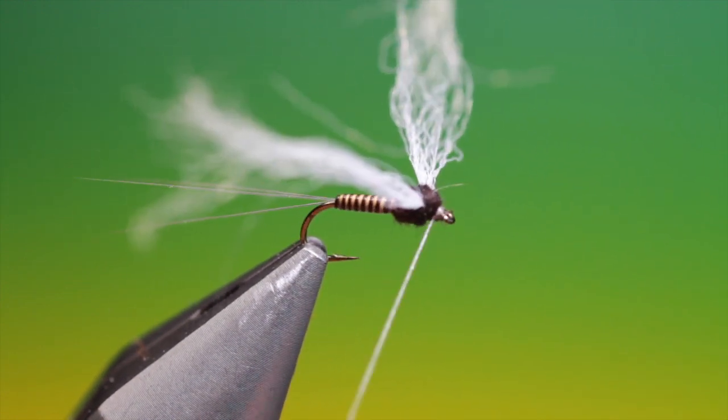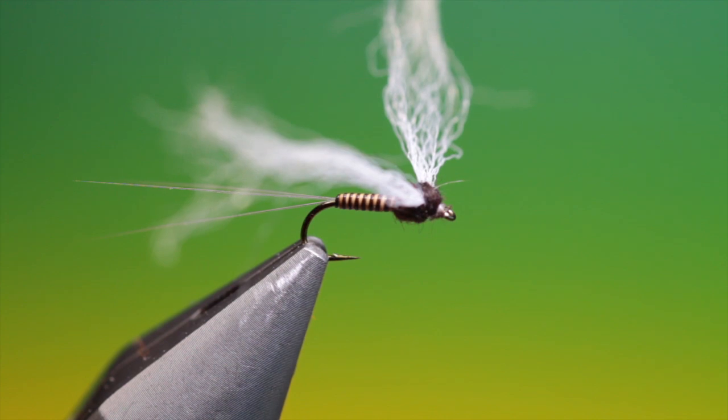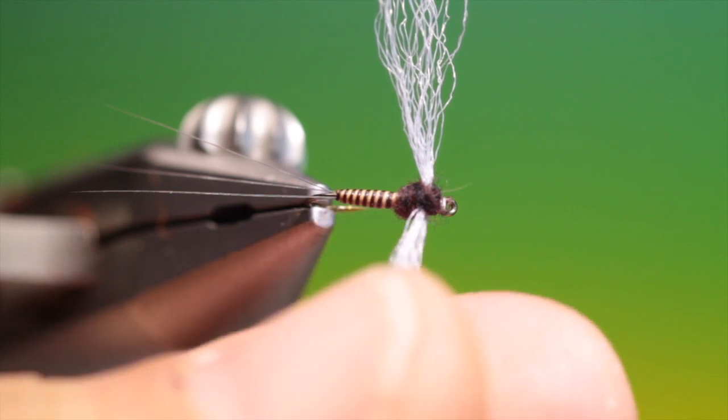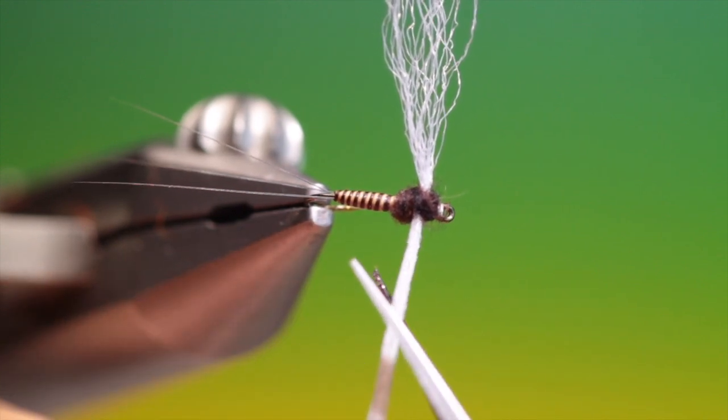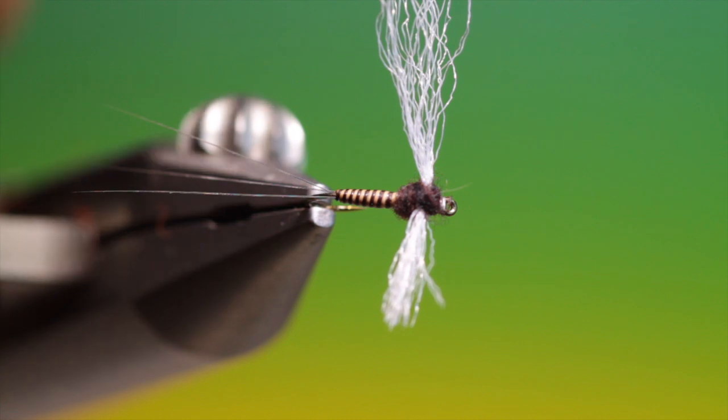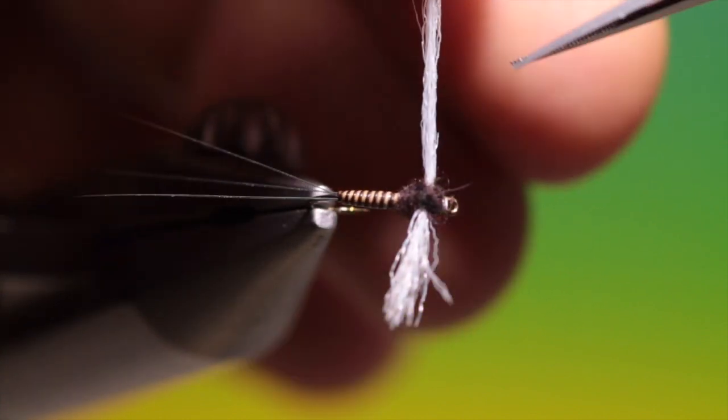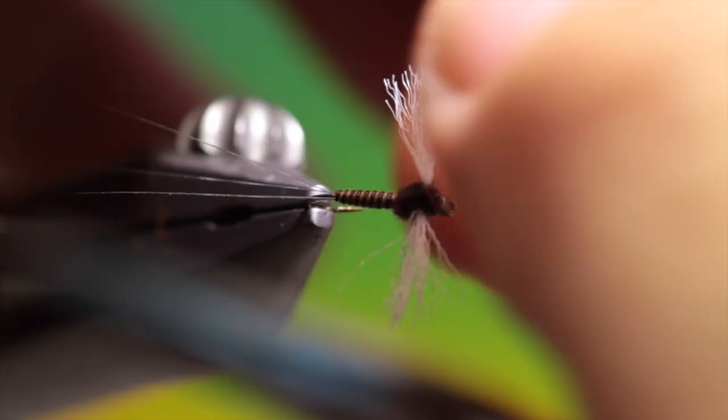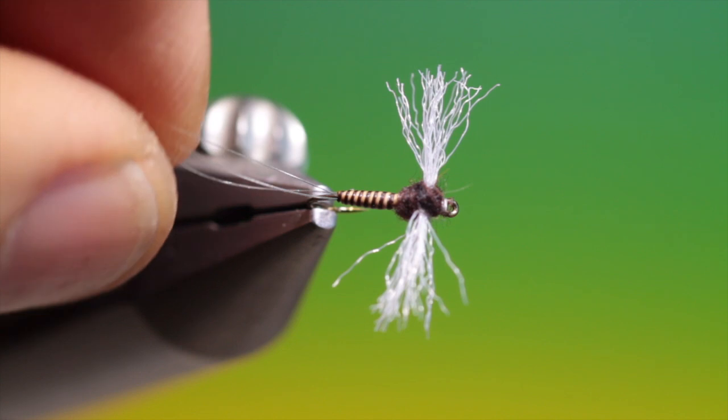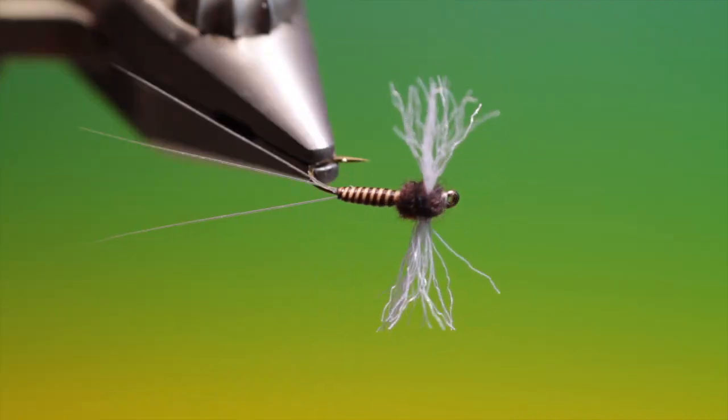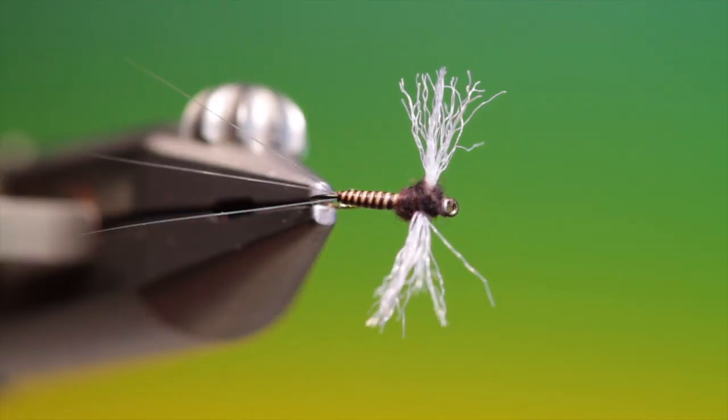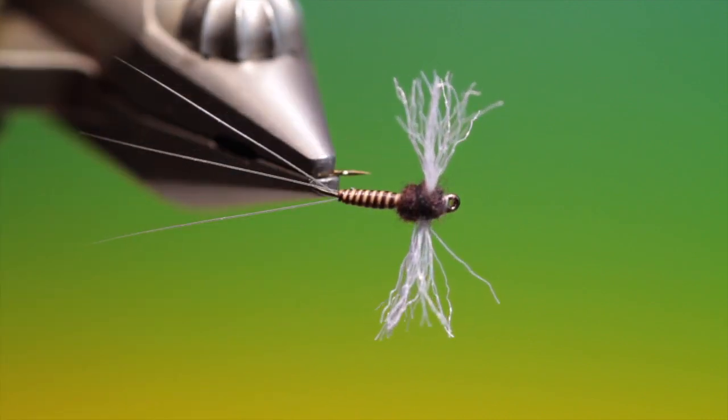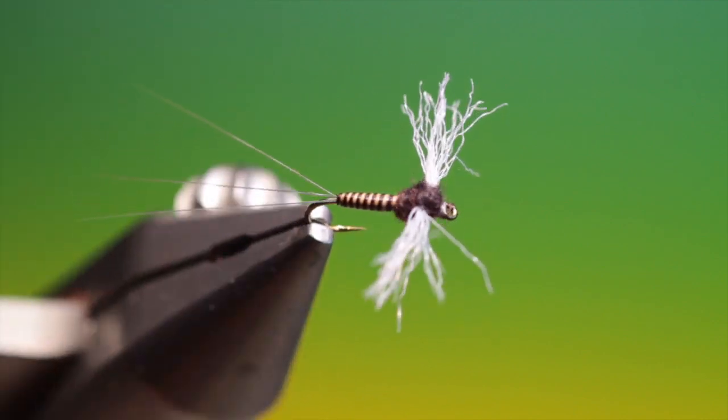Give it a whip finish. Remove your tying thread. And then we can trim off the wings. This is best done at the end so you can get them the right length. And there we are. There's the finished Trico Spent Spinner. And if you enjoy the videos, please like and subscribe. And thanks for watching.